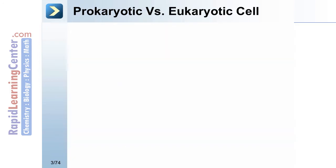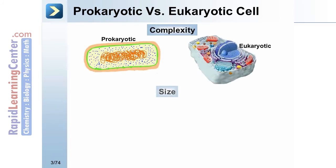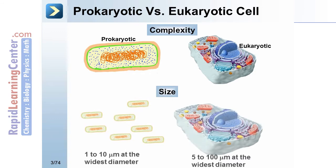Prokaryotic cells are much less complex than eukaryotes, and the size is also substantially different. Prokaryotes are 1 to 10 micrometers at the widest diameter, while eukaryotes can range from 5 to 100 micrometers at their widest diameter.